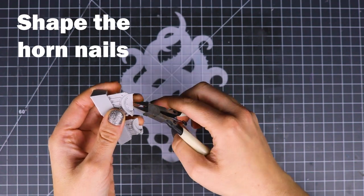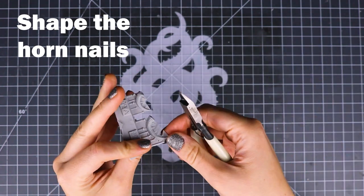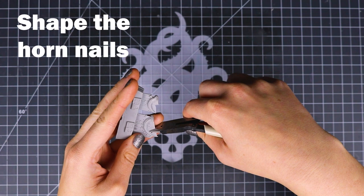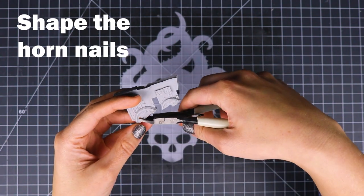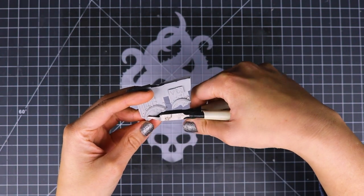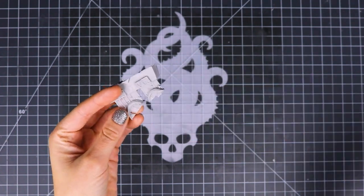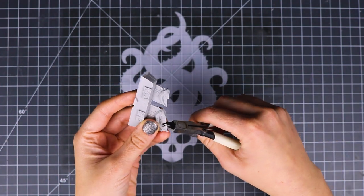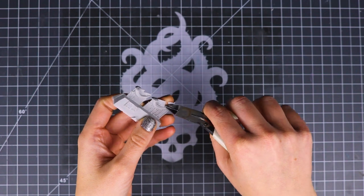Be really careful when you're doing this because if you clip it wrong you can bend the nails and break them. You'll even see that I accidentally bent one but I didn't break it luckily. So just be really careful with how much material you're removing at once. Remove little bits at a time.